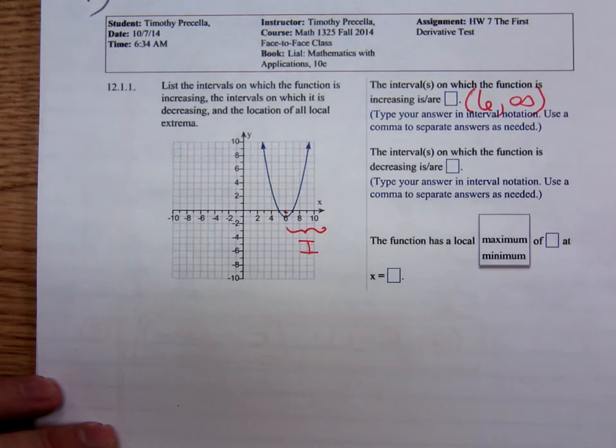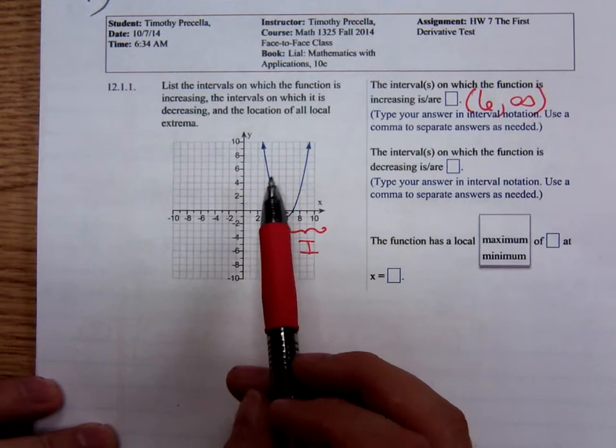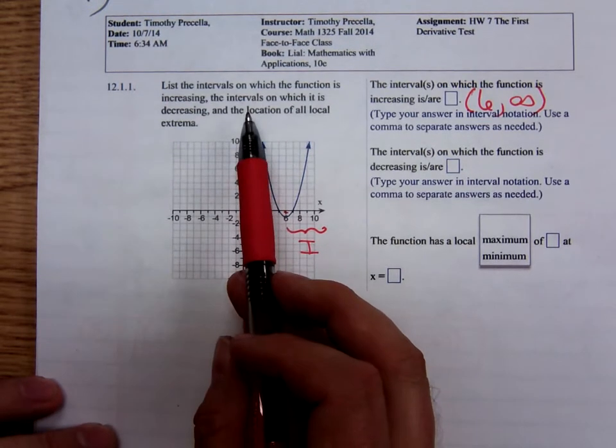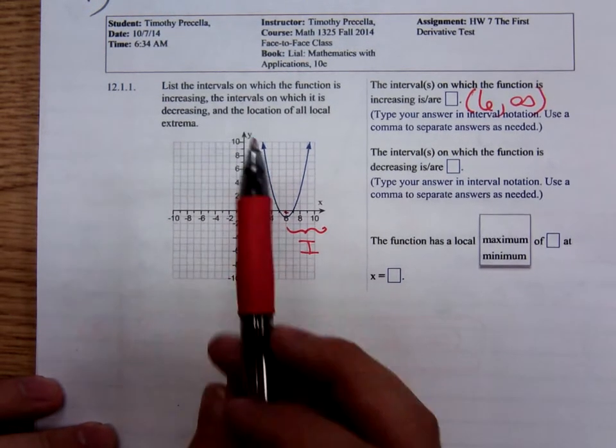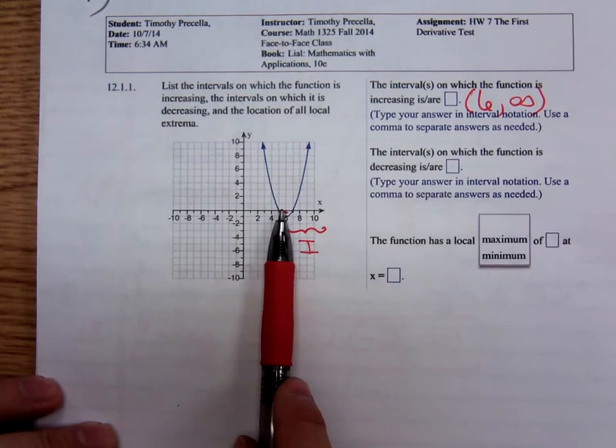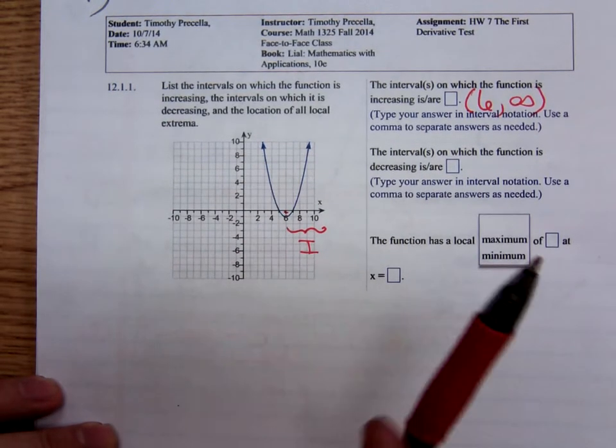Decreasing means the graph is falling from left to right. Don't let the fact that those arrows keep going up make you think it's increasing. It is not. When you look from left to right, the graph is falling.